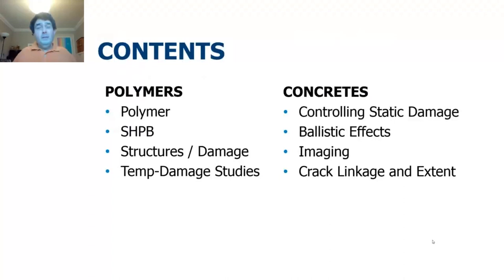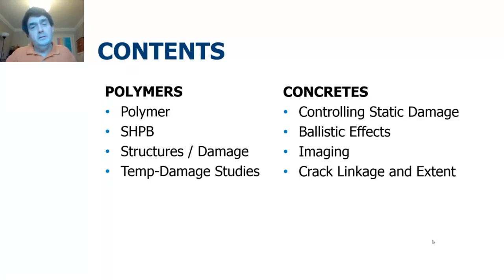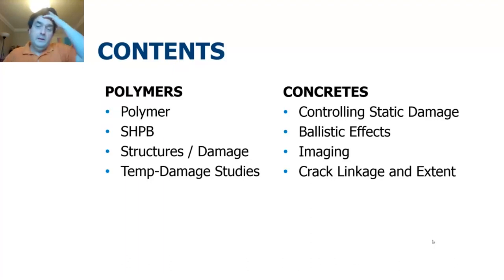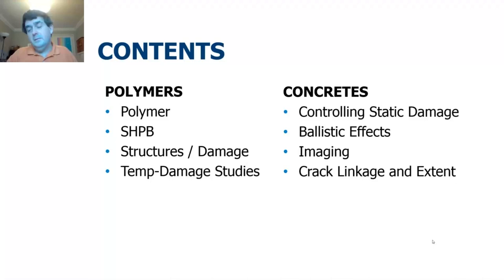The contents: we're going to look at polymers — you've seen a lot of polymers from me in the last week. We're going to look at damage as a function of size and temperature in a very simple structure — in this case a polymer cylinder. We're also going to look at damage in concrete, where we use microwaves to control the static damage in the system, and we look at ballistic effects and imaging, and try to arrive at a parameter which helps us measure damage.